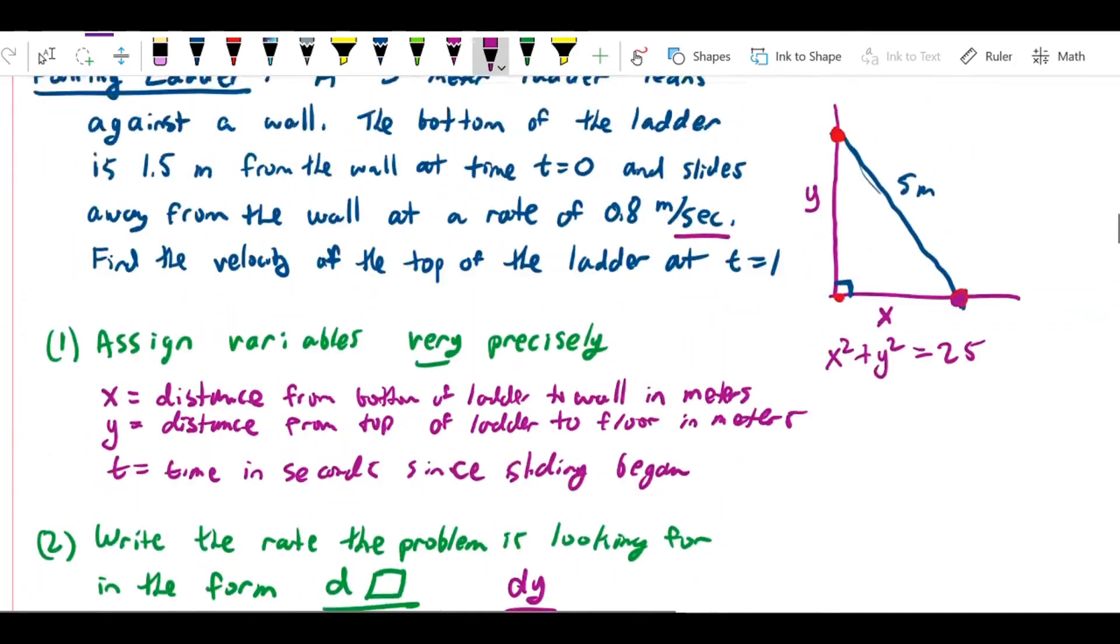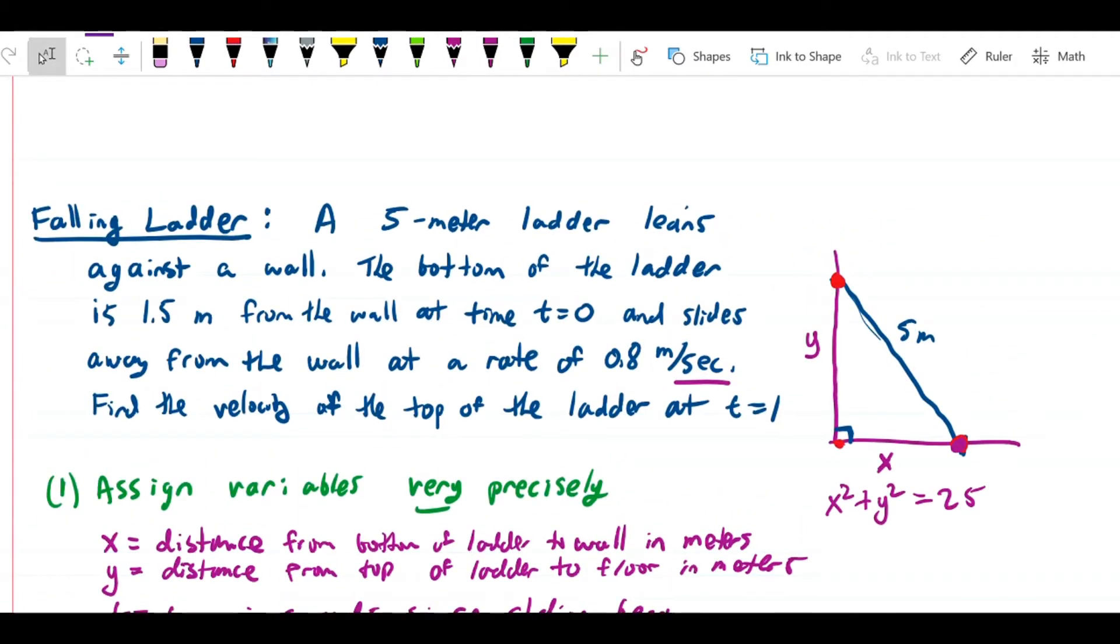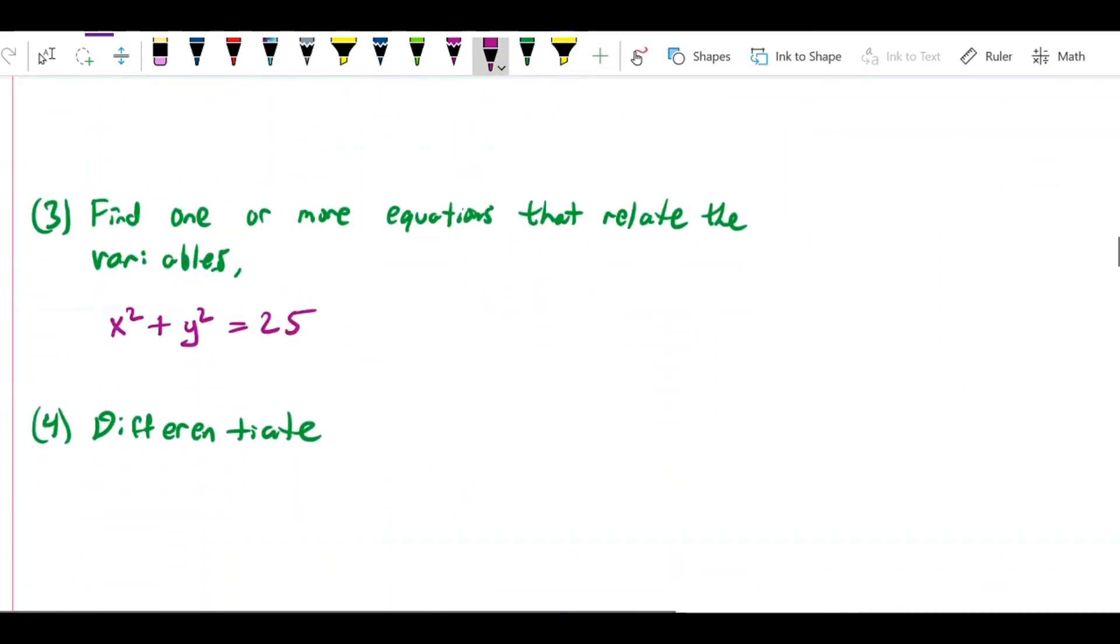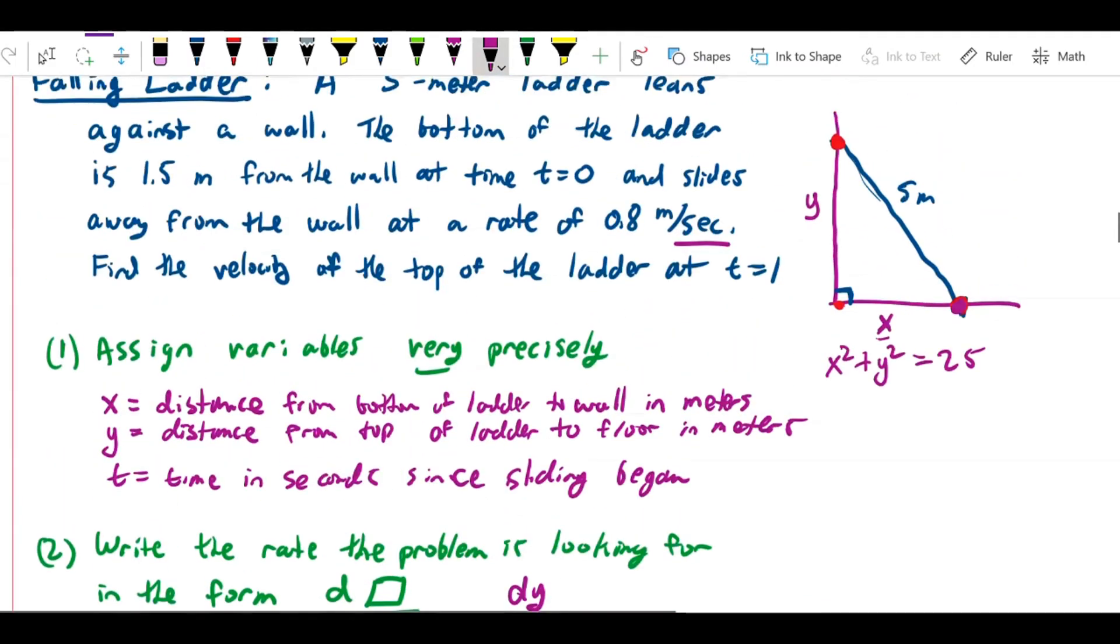Another equation we can read right off the problem is this. The ladder is sliding away from the wall at a rate of 0.8 meters per second. What that tells us is that this quantity x is increasing at a rate of 0.8. In other words, dx over dt equals 0.8.